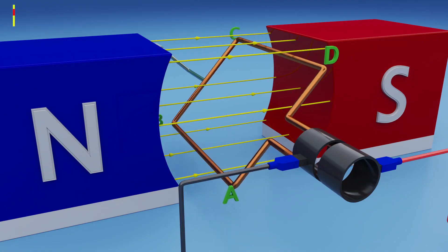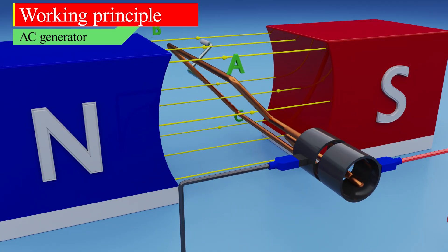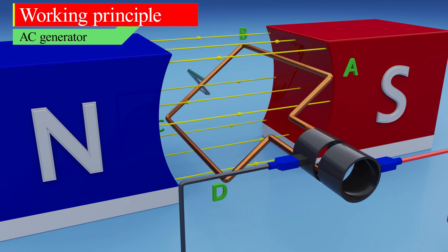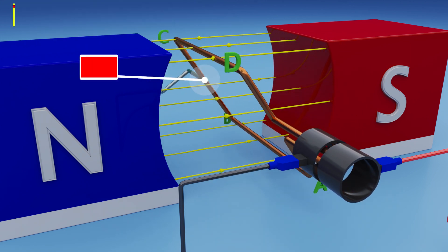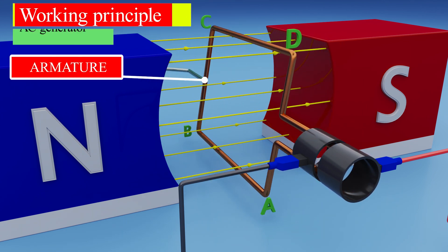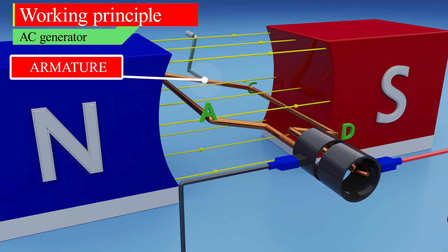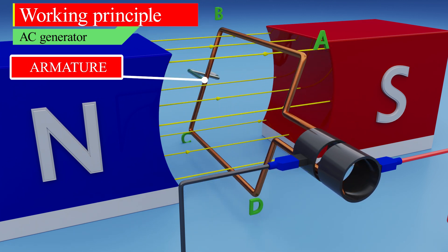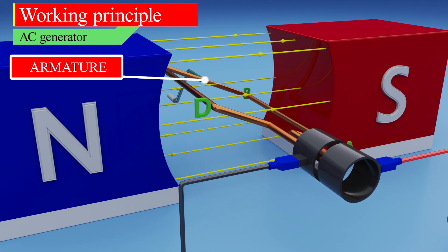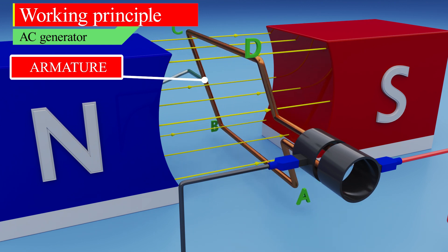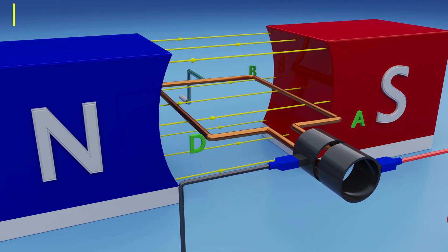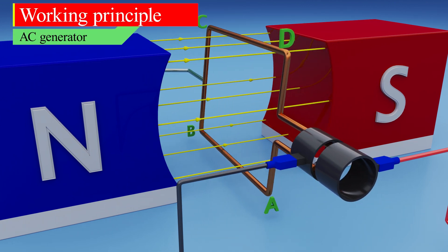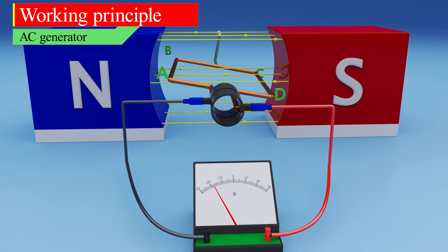Furthermore, we will explain the working principle of the AC generator. When the armature rotates between the poles of the magnetic field, the armature cuts the lines of magnetic field and generates current in the coil of the armature. This induced current then flows through the circuit connected to the armature.